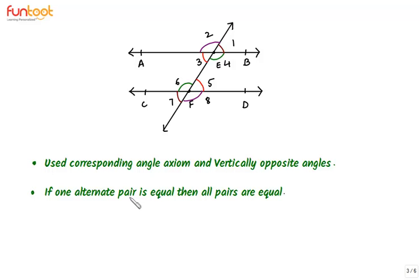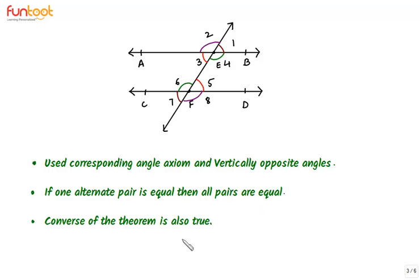If two lines are intersected by a transversal and one alternate pair of interior angles is equal, then all other pairs of alternate interior angles are also equal. The converse of the theorem is also true: if we have two lines intersected by a transversal and any one pair of alternate interior angles is equal, then the two lines will be parallel.